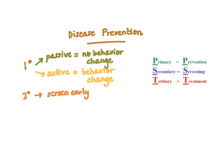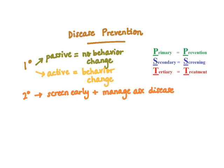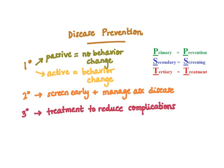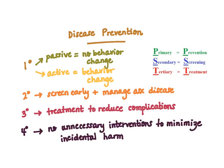Secondary prevention is where you screen early in order to manage an asymptomatic disease — individuals here have some risk factors. Tertiary prevention is where people are already symptomatic and are treating the disease to reduce complications. Finally, there is a quaternary stage, which entails avoiding unnecessary interventions in order to minimize incidental harm; a prime example of this is the use of imaging studies.